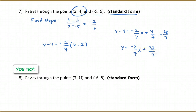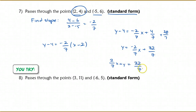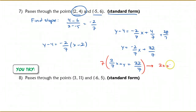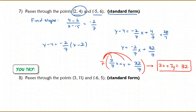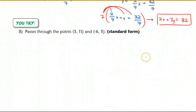To get standard form, I move the x term over by adding 2/7 x: 2/7 x + y = 32/7. I need integer coefficients, so I multiply by 7 throughout — distributing to each term — and get 2x + 7y = 32. That's the final answer in standard form with integer coefficients. Try number 8 on your own. This is the end of the lesson — hopefully this is coming back to you quickly, because it's all review.